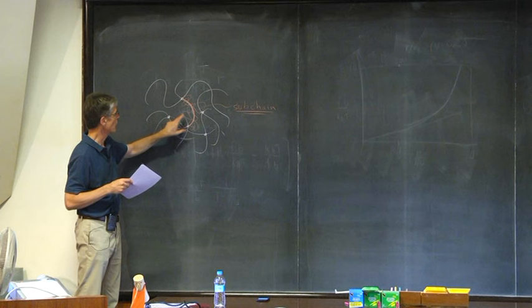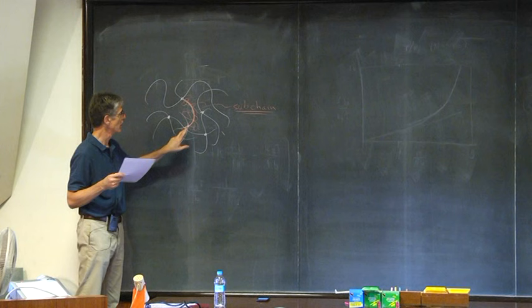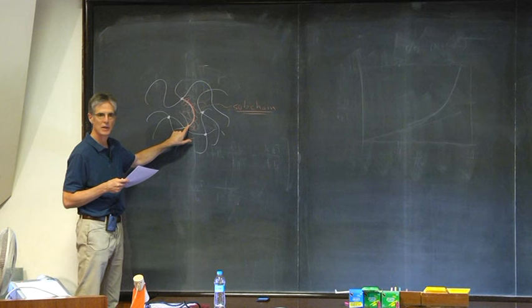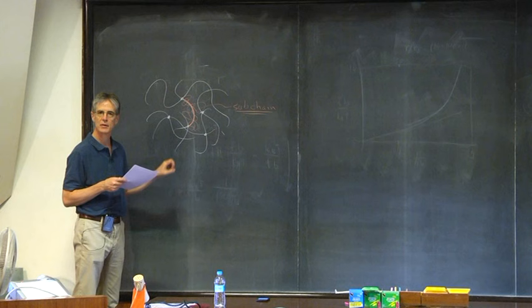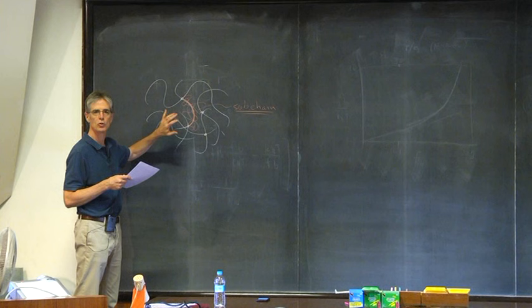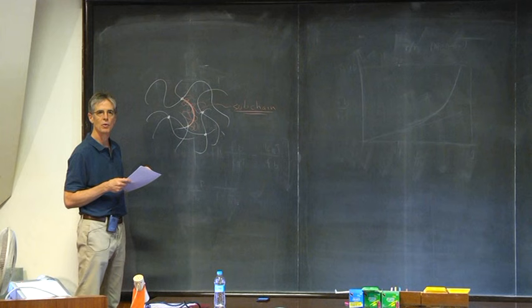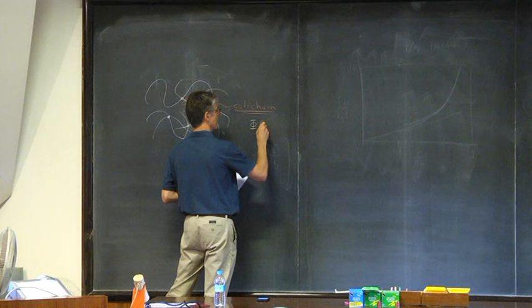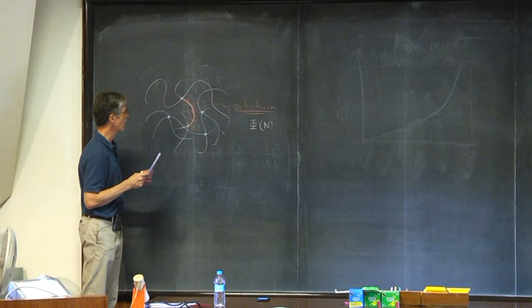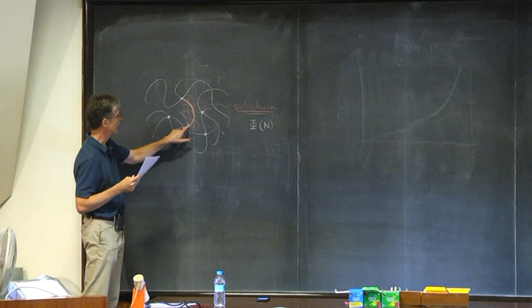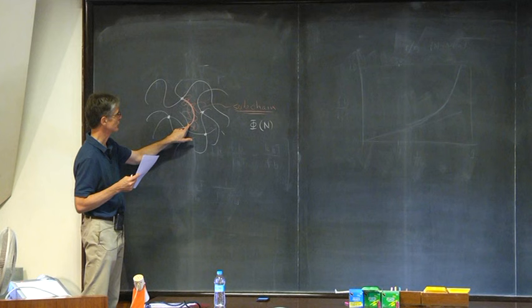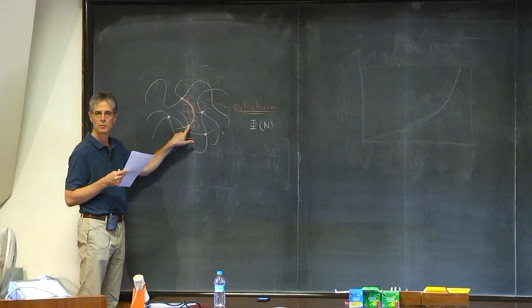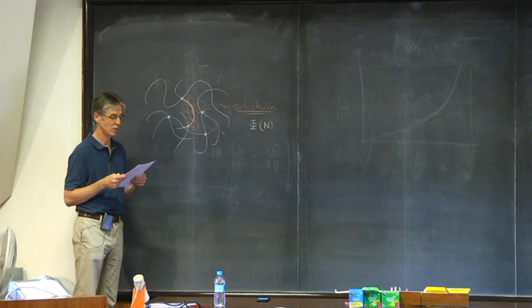What I want to ask is: what's the free energy of this whole network? The free energy is going to be the free energy of the sub-chains for whatever end-to-end distribution they happen to have. There are two things involved: the end-to-end distribution, and the distribution of lengths of the sub-chains — the cross-links occur randomly during the polymerization process.